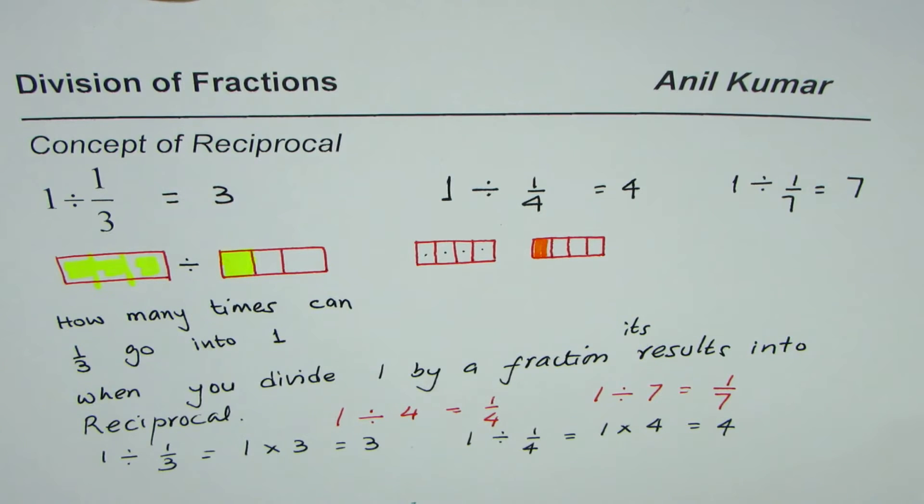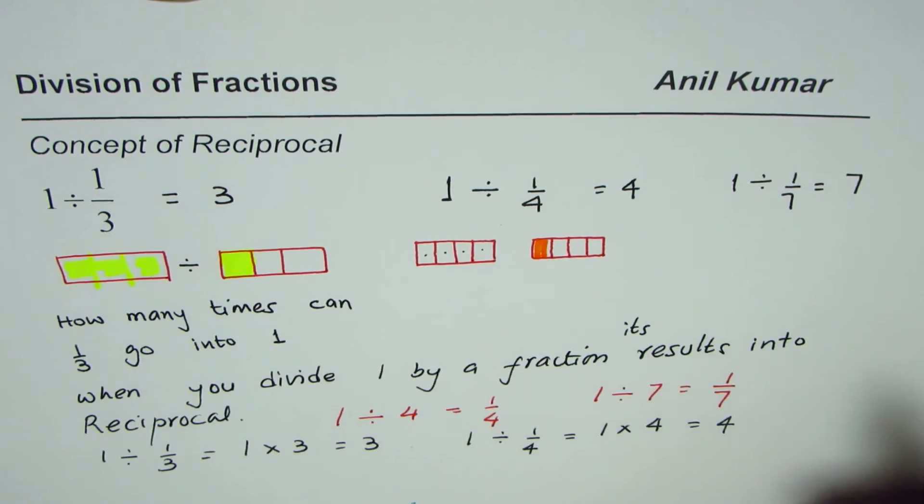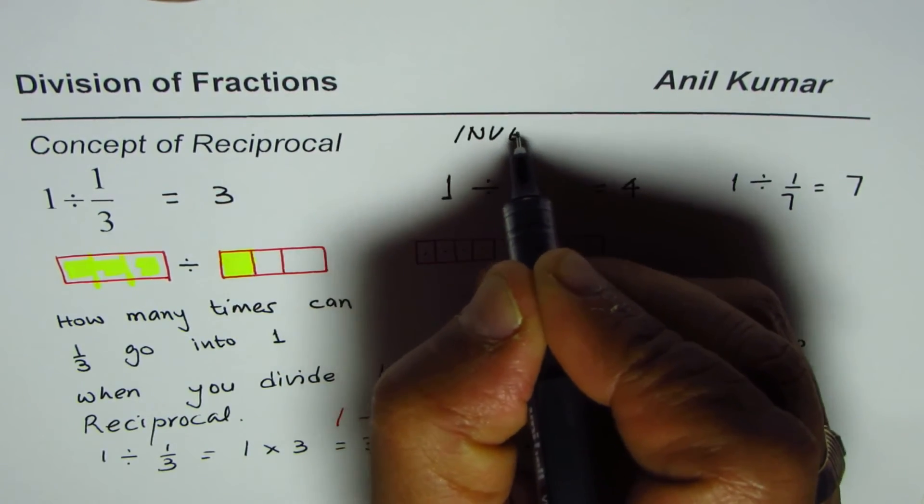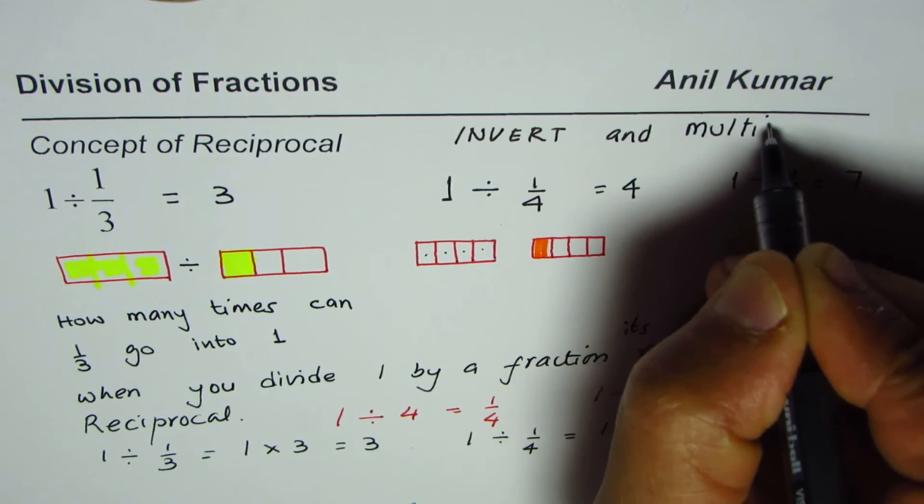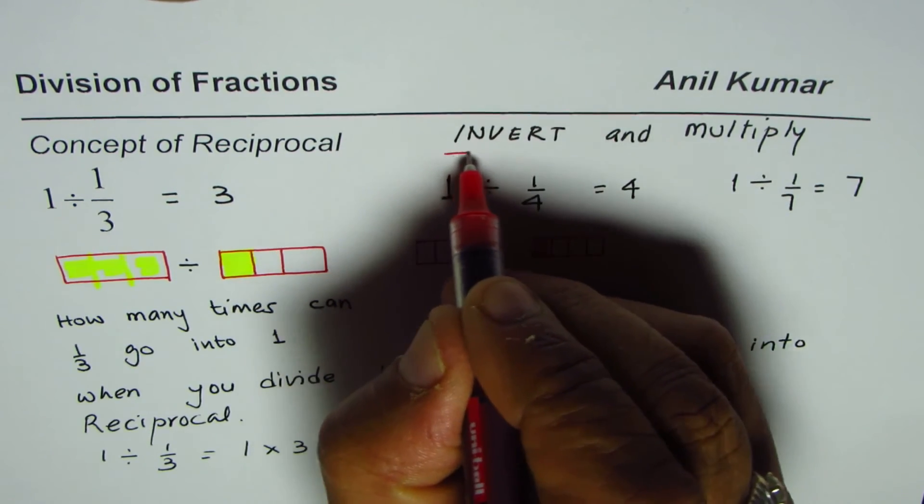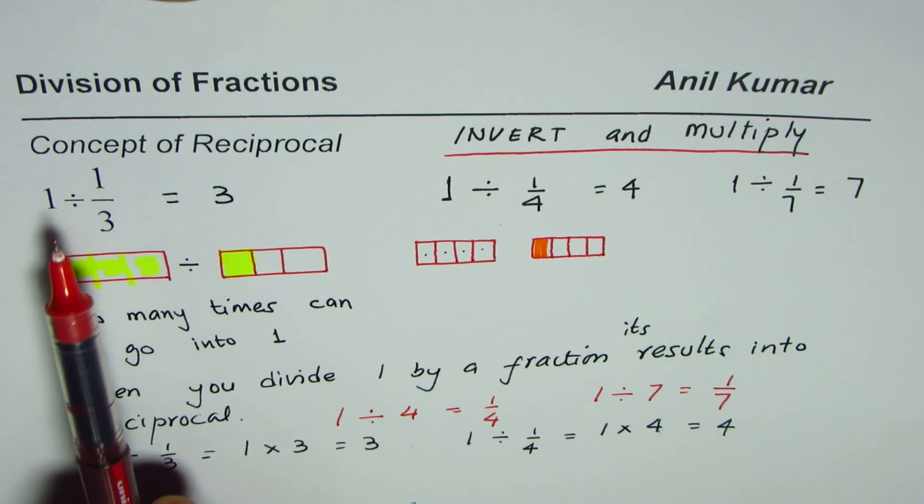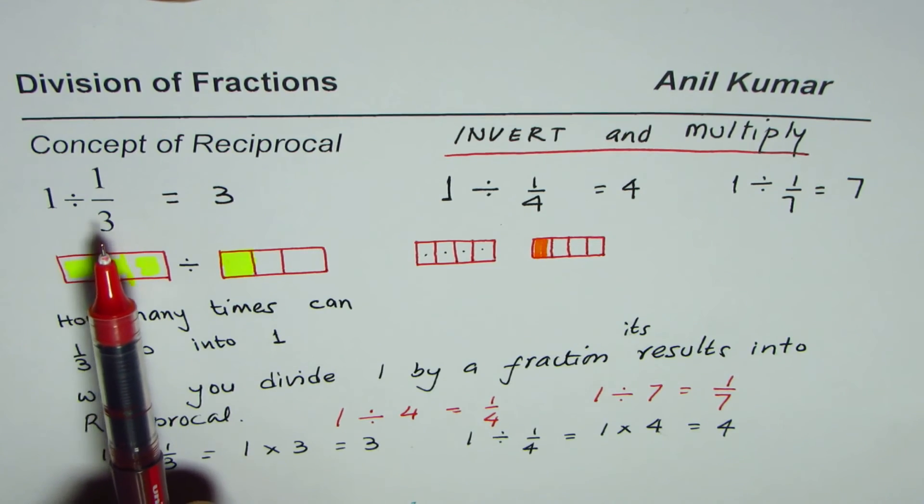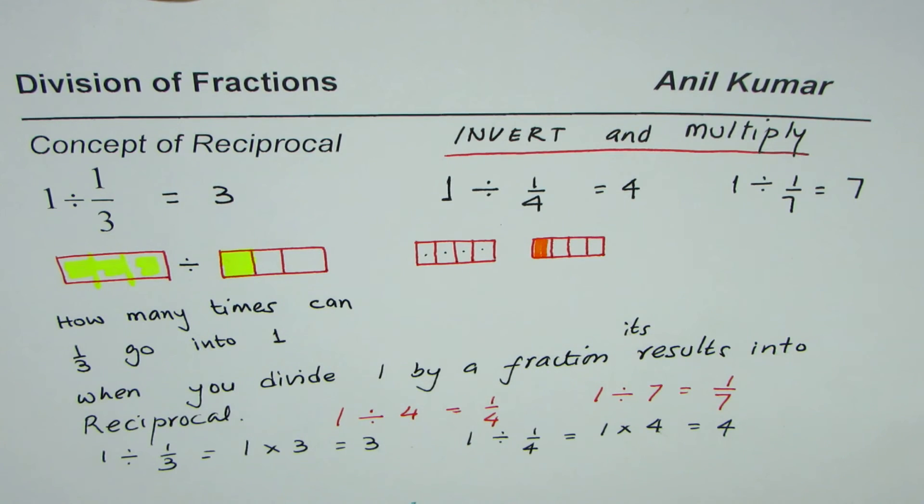And here what we are trying to say is that to divide is same as invert and multiply. So that is another concept which we can look into for dividing fractions. So whenever we are dividing fractions we can actually multiply by its reciprocal. We can invert and multiply. So that can at times make the job simpler.